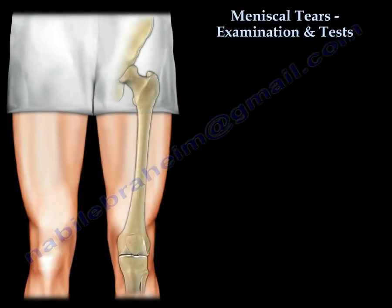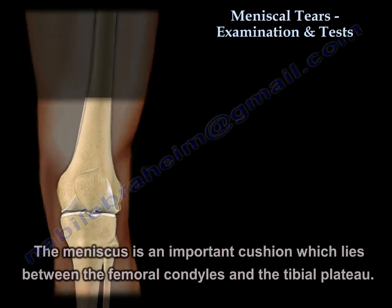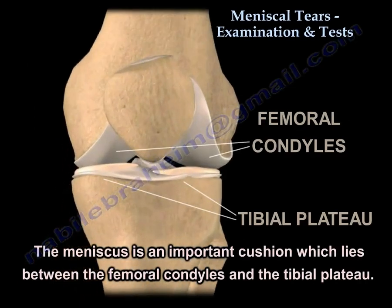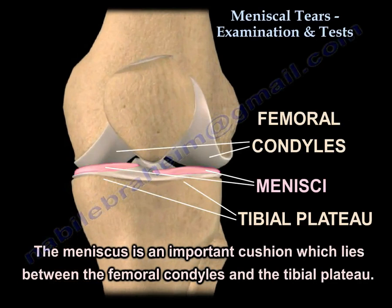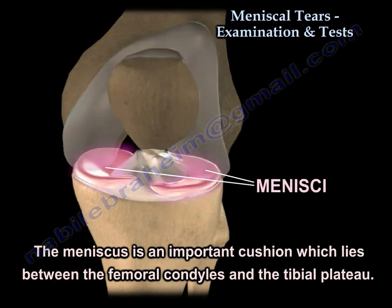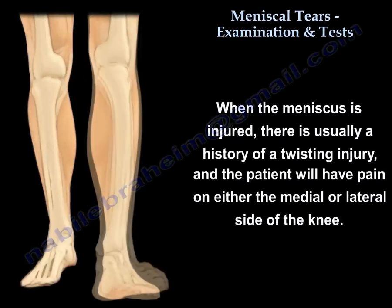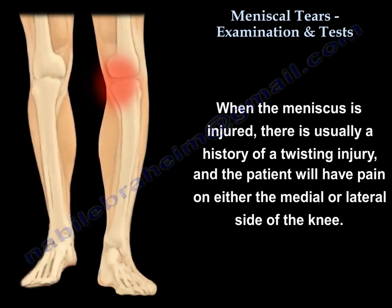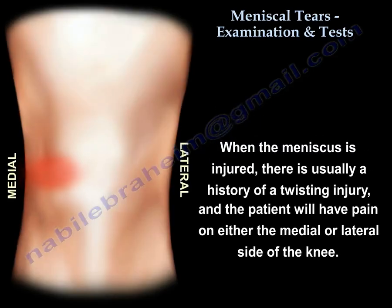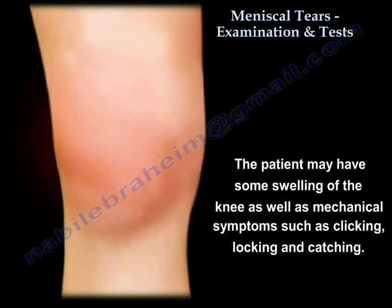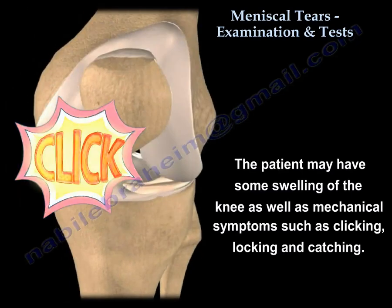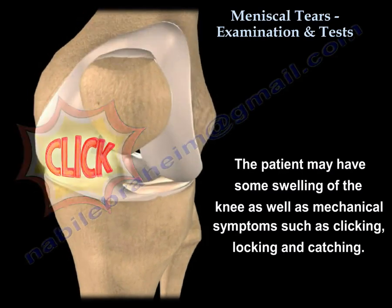Meniscus tear examination and tests. The meniscus is an important structure that lies between the femoral condyle and the tibial plateau. When the meniscus is injured, usually there is a history of twisting injury and the patient will have pain on the medial or the lateral side of the knee. The patient may have some swelling and may also have mechanical symptoms such as clicking, locking, and catching.